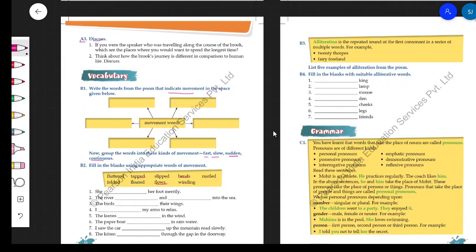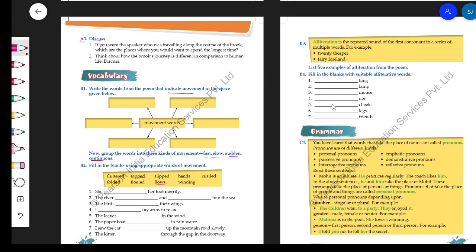Next is alliteration, that I had told you about earlier while discussing the poem as well. In alliteration, what happens is that two or more words in close proximity can have—I have, you know, the same consonant sound, or start with the same consonant sound.